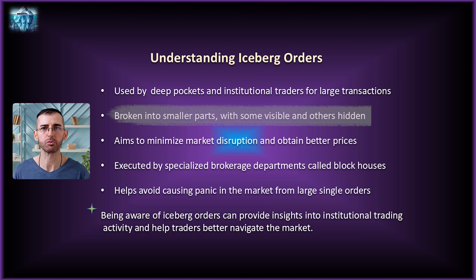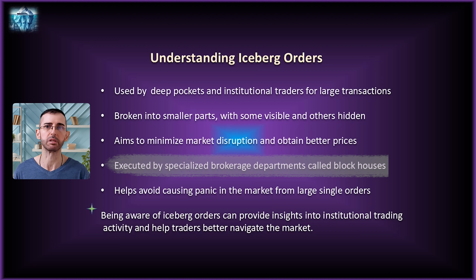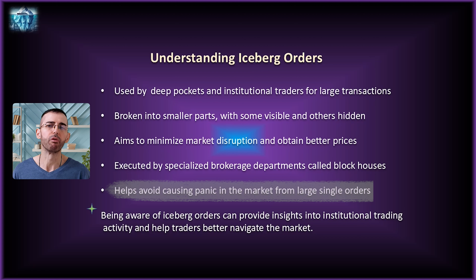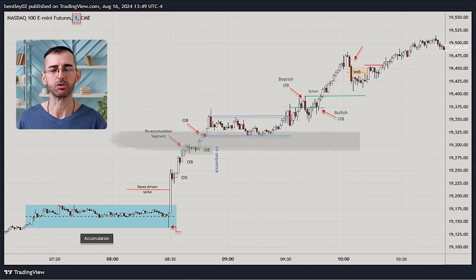The idea behind iceberg orders — which are executed by block houses, essentially departments within Wall Street's top brokerage firms that specialize in breaking up large orders — is to avoid causing a stir or panic in the market. By breaking up one massive order, these big traders can get better prices and execute their trades without disrupting the market too much. But that's a different topic — just mentioning it as an FYI.